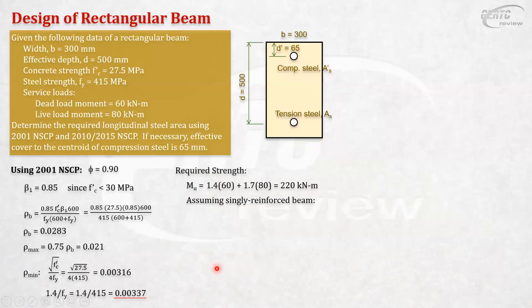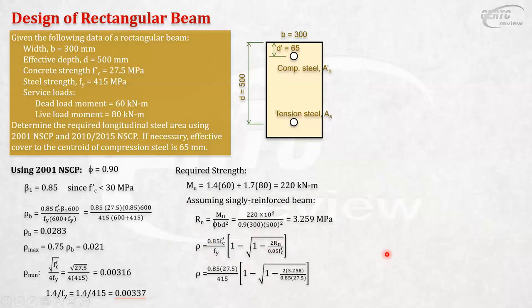Okay. This is easy. So, assuming singly reinforced, we can use this formula. Rn equals Mu over phi bd squared. So, with Mu equals 220 and bd known, phi is equal to 0.9. We can get the Rn. Okay. I just substituted the values. Rn is 3.259. Then, you compute your rho. Okay. This is the formula. 0.85 f'c prime over fy times this quantity. All right. That will give you 0.00849.